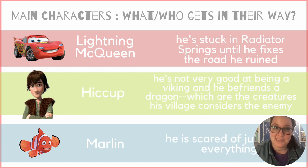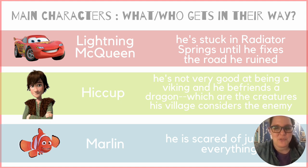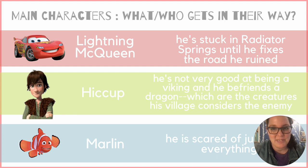Now let's take a look at the conflicts of our main characters — who or what gets in the way of the thing that they want. For Lightning McQueen, his conflict is that he's stuck in Radiator Springs until he fixes the road he ruined when he first showed up. Hiccup's conflict is that he's not very good at being a Viking, and then he befriends a dragon, Toothless — and in his village, dragons are considered the enemy, so that creates all kinds of conflict for poor Hiccup. In Finding Nemo, Marlin's conflict is that he is scared of just about everything. His goal of finding his son Nemo means he encounters many conflicts — most of them funny and hilarious — along the way in the ocean, and he has to overcome them.